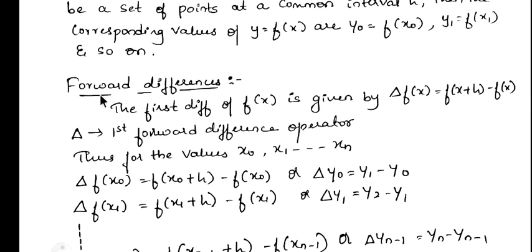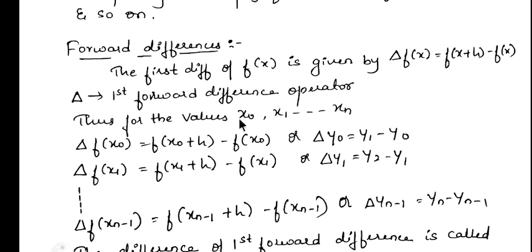Now we go to the next definition, that is forward difference. The first difference of f(x) is given by delta f(x), which is equal to f(x + h) minus f(x). The symbol delta is called the forward difference operator. For values x0, x1, and so on up to xn, delta f(x0) = f(x0 + h) - f(x0), or equivalently delta y0 = y1 - y0.